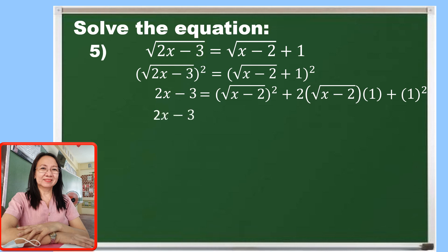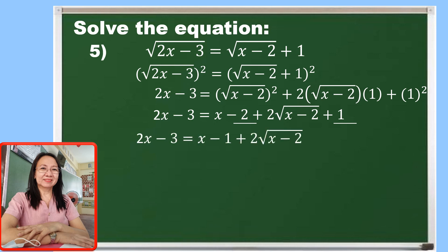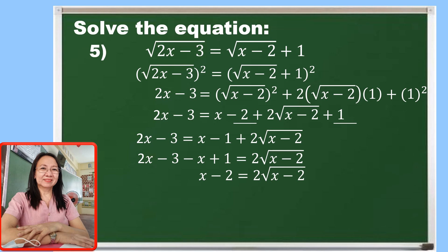So let us copy the left side and simplify the right side. The square root of x minus 2 squared is x minus 2, and 2 times the square root of x minus 2 times 1 is 2 times the square root of x minus 2, and 1 squared is 1. Let us combine negative 2 plus 1 which is negative 1. We observe that we have x minus 1 on the right side. We apply the addition property by adding both sides by negative x plus 1 to eliminate x minus 1 on the right side.